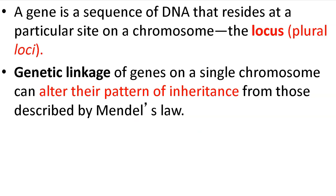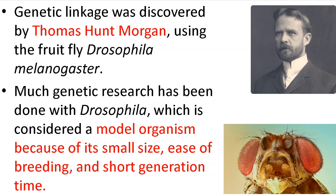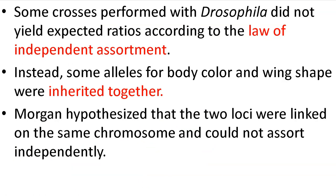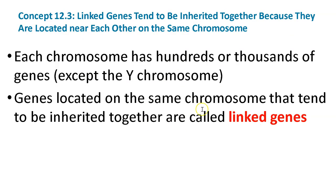Sometimes genes are linked. Genetic linkage of genes on a single chromosome can alter their pattern of inheritance. For example, if genes are on separate chromosomes, that's fine — but if two genes are on the same chromosome, they might travel together. This is what Thomas Hunt Morgan found out using Drosophila melanogaster, the fruit fly, which is a model organism. Some crosses Morgan did did not yield expected ratios according to the law of independent assortment — some alleles were inherited together. This led him to the idea of linked genes.